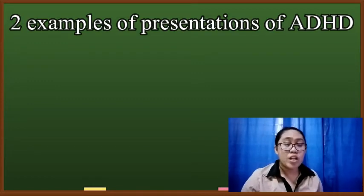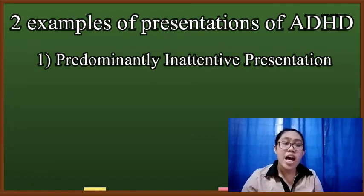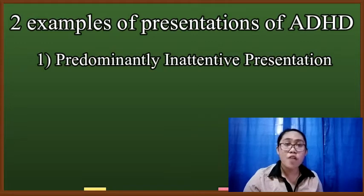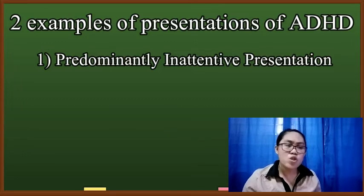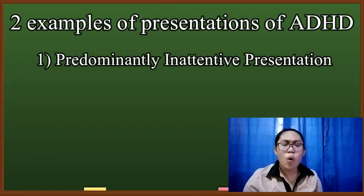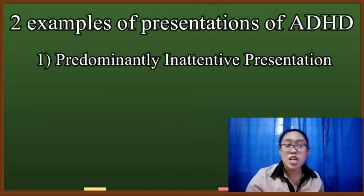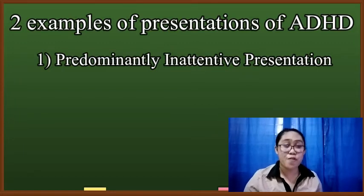The first example is known as the predominantly inattentive presentation. In this presentation, the child or student is often unable to sustain attention, is easily distracted, has difficulties organizing, makes careless mistakes, tends to lose things, and may sometimes be very forgetful. Note that although standardized instruments are used to confirm the presence of this disorder, teachers' observations are also essential in identifying this condition.